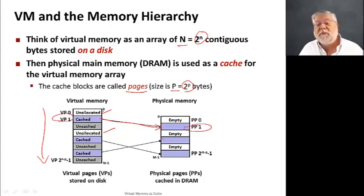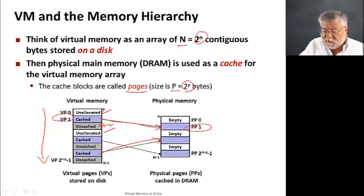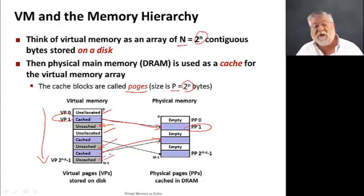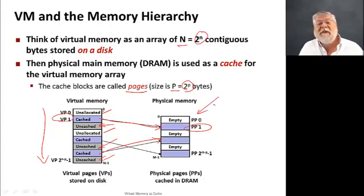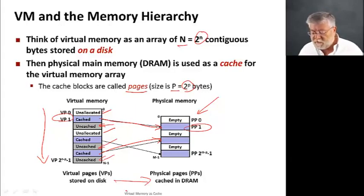How does a particular virtual page map to a physical page? You'll notice these pages could go anywhere in the physical memory where there's an empty page. Some blocks, shown in gray, are uncached — space we're using in virtual memory but haven't moved to physical memory yet. We haven't needed it yet, so it's still sitting on disk. We haven't yet moved it to the dynamic RAM of the computer system.